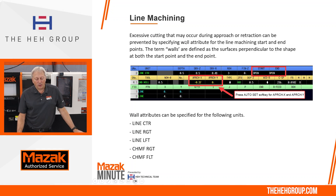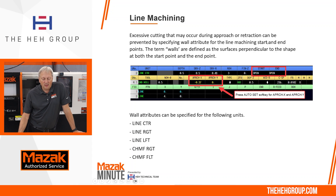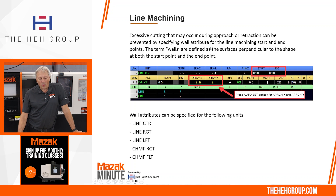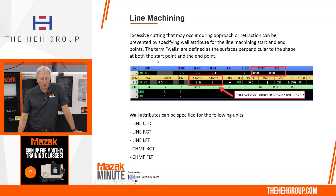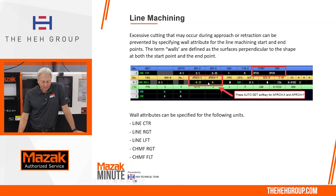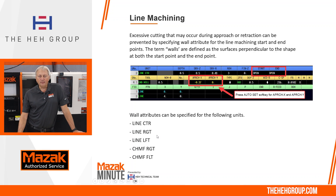Excessive cutting that may occur during approach or retraction can be prevented by specifying a wall attribute for the line machining start and end points. Walls are defined as the surfaces perpendicular to the shape at both the start and end points. Wall attributes can be specified for the following units: line center, line right, line left, chamfer right, and chamfer left.